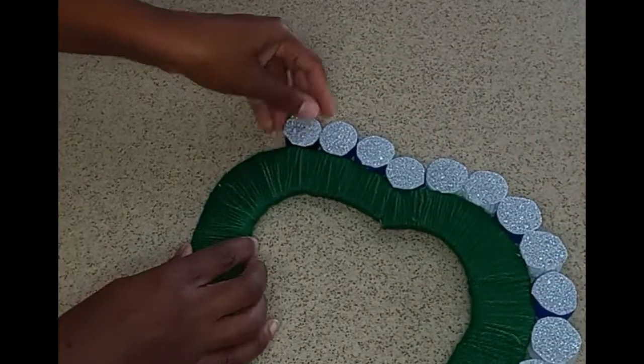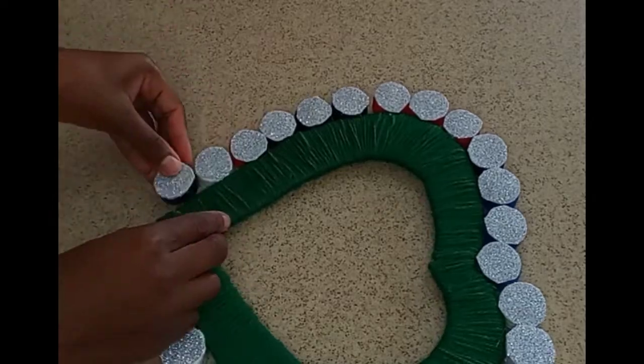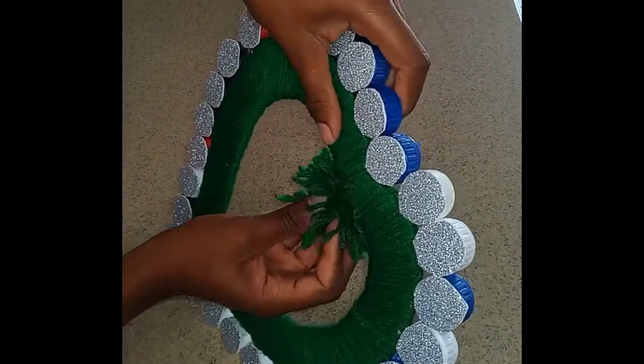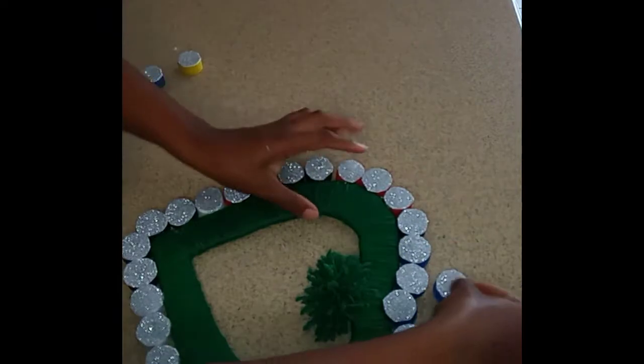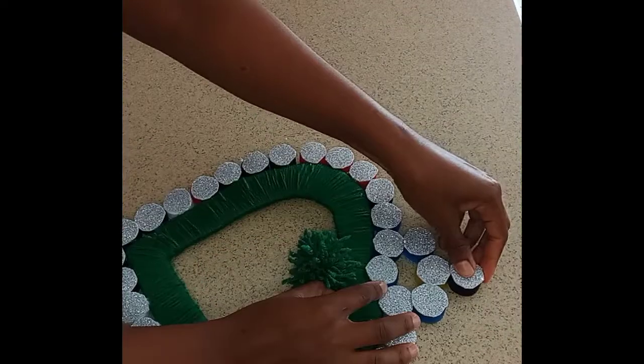After I've done that, I went in with this pom-pom just to give my heart a little decoration. Check out how to make this pom-pom, the link will be in the description below. I just went in with three additional corks to give my heart a cute little design at the top.